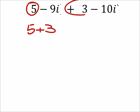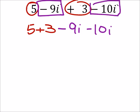I can still circle them. Okay, so I'm using the commutative property of addition just to move these around. Then I've got minus nine i and then minus ten i. These are the two terms with i's, kind of like if they had x's.